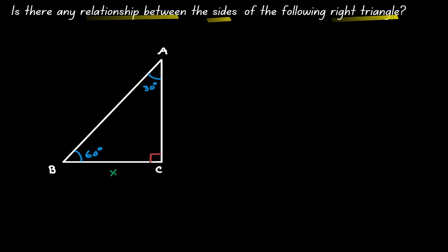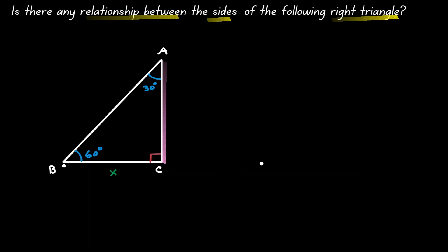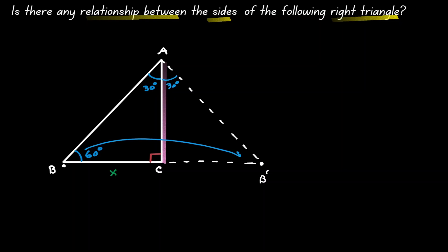What would happen if we get our triangle and reflect it over the line AC? If we do, notice that point B is going to be reflected somewhere over here. Let's call that point B'. Point C is on the line, but it's not going to move. The same goes with point A. Let's connect this point. Because of the reflection, this angle is going to land in this space, so we know that the value of this angle is 30 degrees. And because of the reflection, we know that this angle is going to land in this place, which is going to have the same value of 60 degrees.